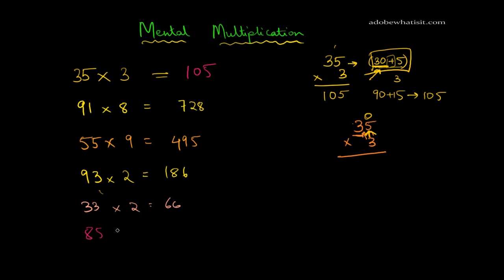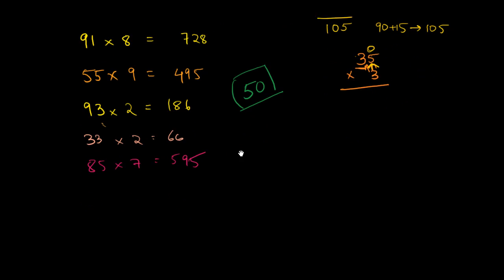What is 33 times 2? It's just 66. What is 85 times 7? 85 times 7 is 560 plus 35, 595. And I encourage you to do a bunch of these. Make up your own problems. Practice at least 50 of 2 by 1s. Once you're done practicing the 50, meet me. Pause this video right now.